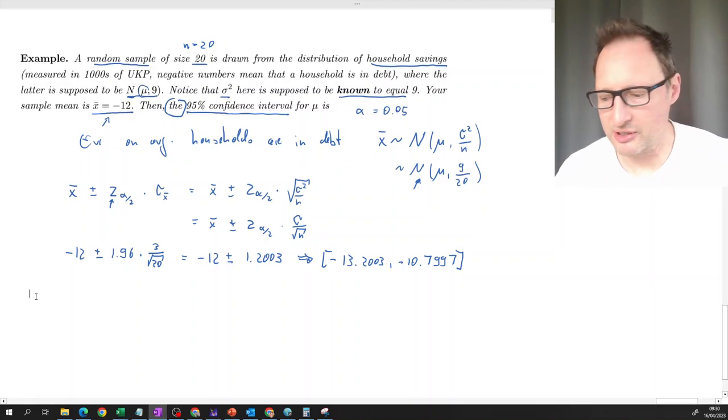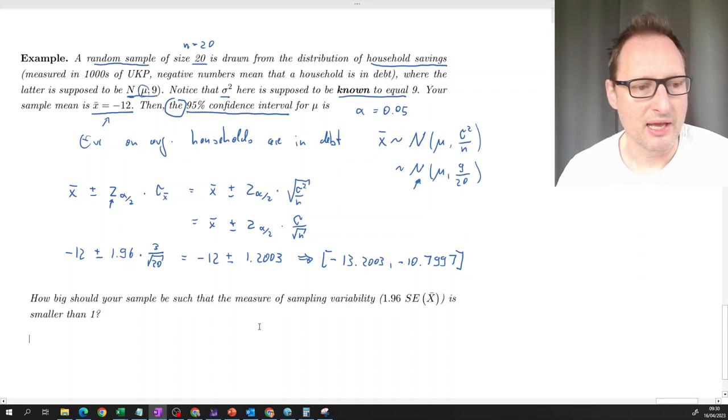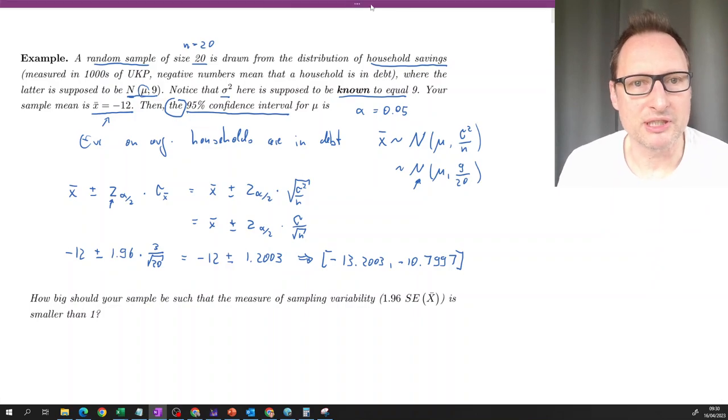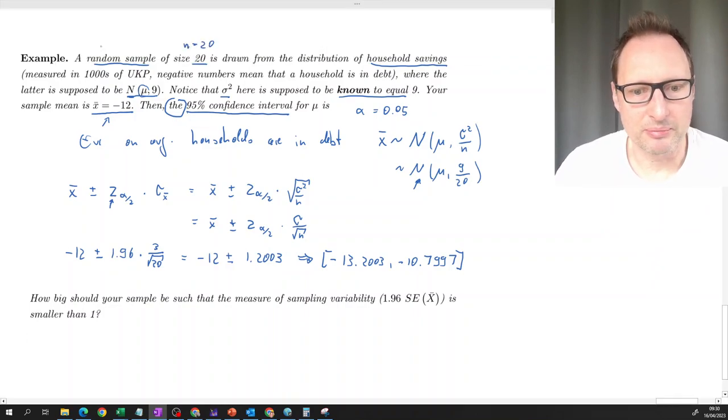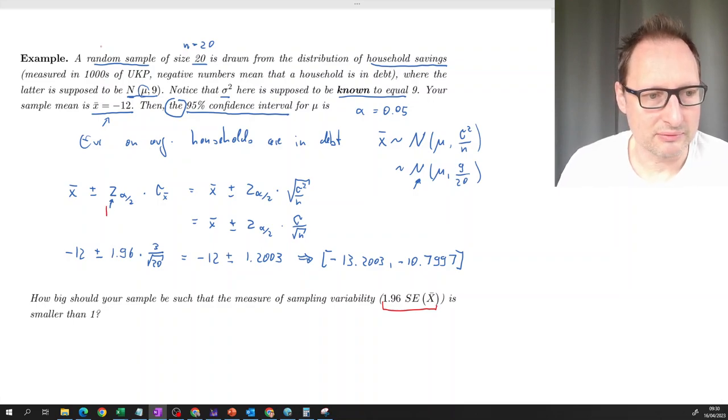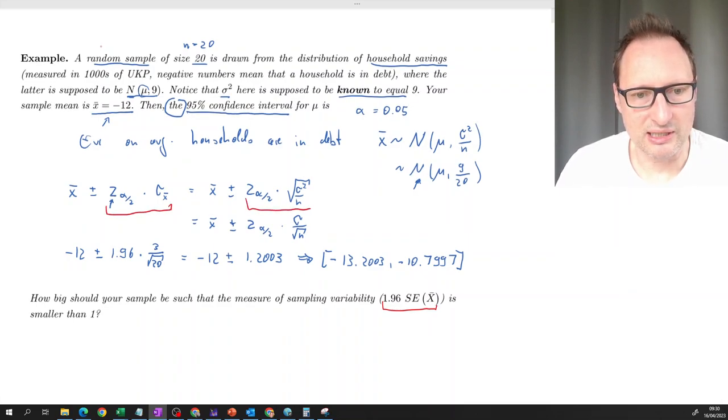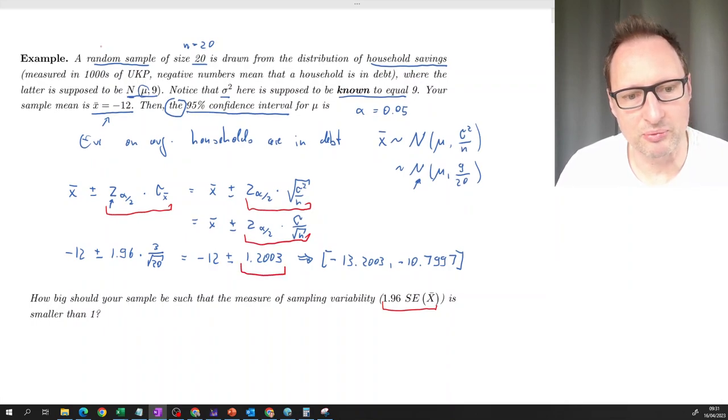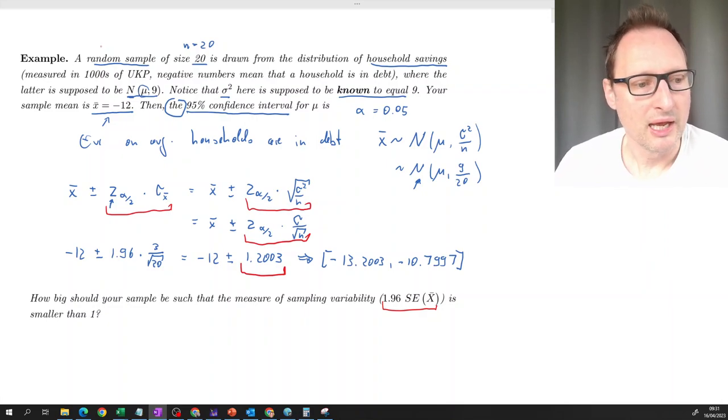And that's just the way it is. So let's have a little supplementary question here. How big should your sample be such that the measure of sampling variability? I mean, these different color here, the measure of sampling variability, 1.96 times the standard error of X bar. This is this term here. All the red terms here. That's sort of a measure of sampling variability. And we calculate that to be 1.2, 1.2 approximately.